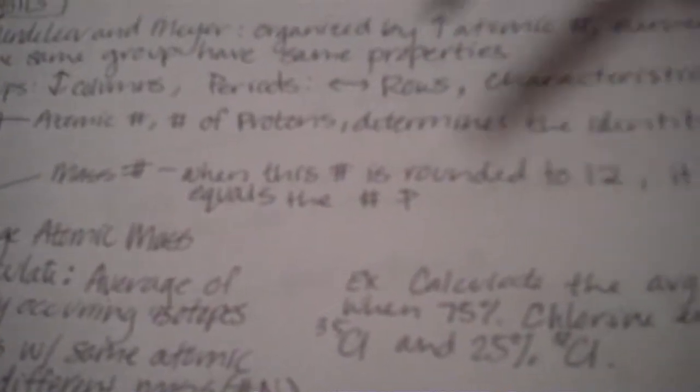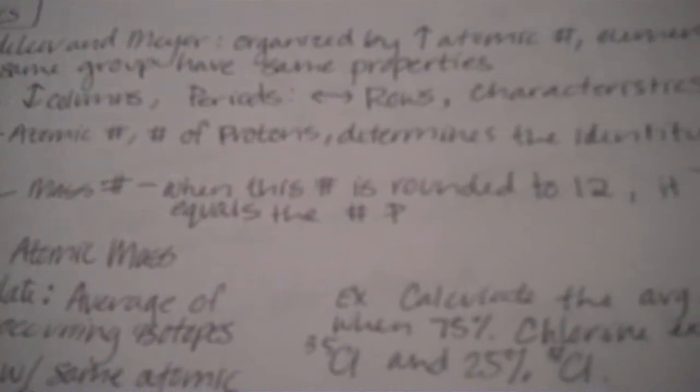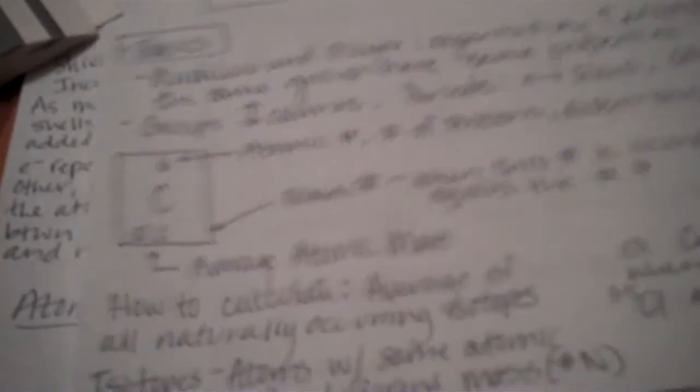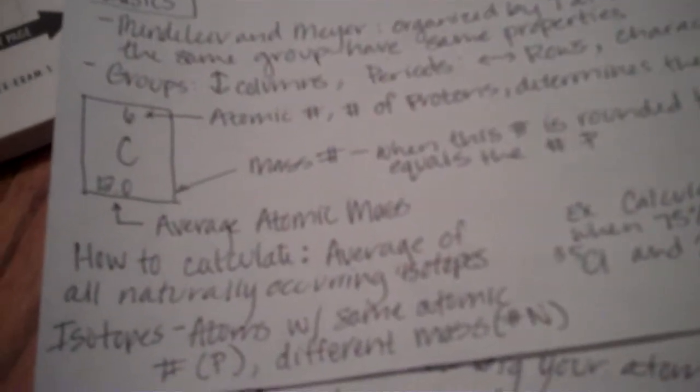12.0 average atomic mass. If you were to round that number to 12, that's your mass number. When it's rounded, your mass number equals the number of protons plus the number of neutrons. So, to find the number of neutrons, you would need to subtract the atomic mass minus the atomic number. In a decimal form, that represents the average atomic mass.